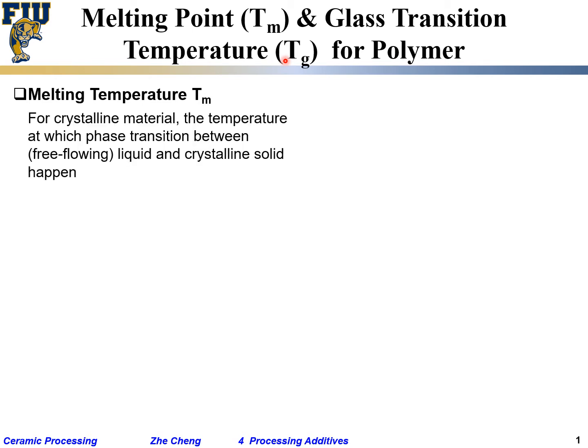Melting temperature Tm is the transition temperature for crystalline material — a phase transition between a free-flowing liquid and a crystalline solid. Think of water above zero degrees C: the viscosity is pretty low, free-flowing. Below zero degrees C under standard pressure, water exists as a crystalline solid, which is ice. That's melting temperature for crystalline material.